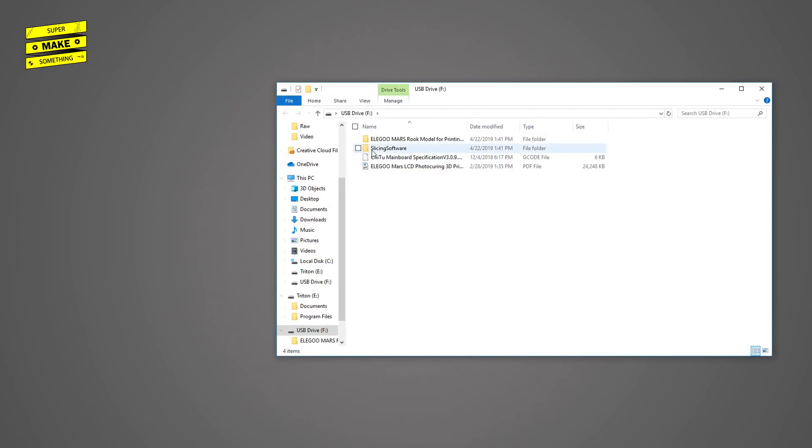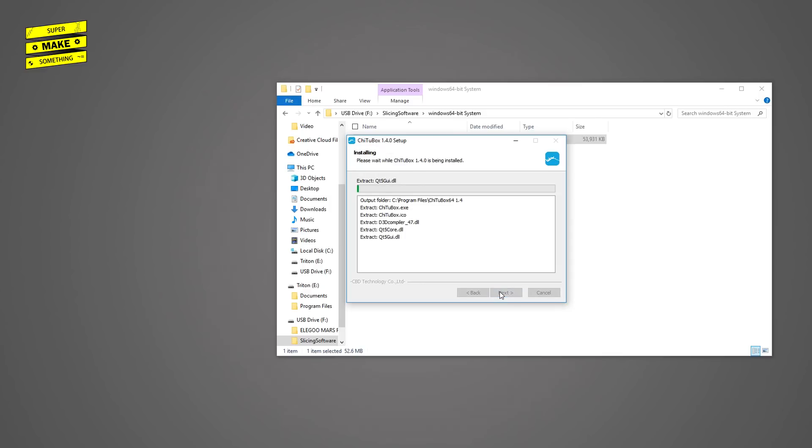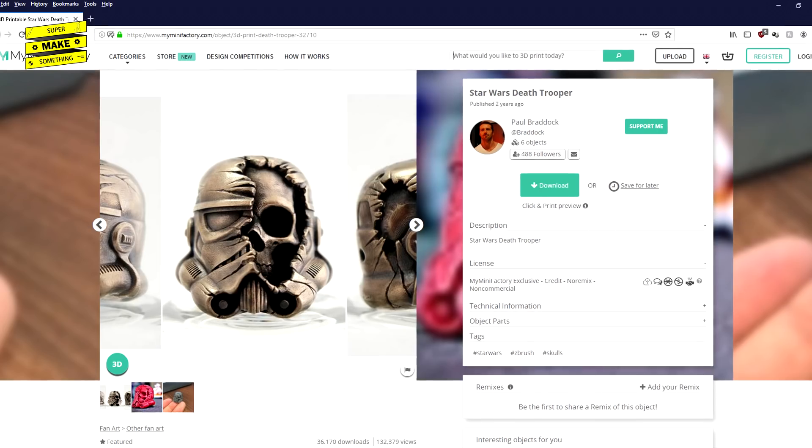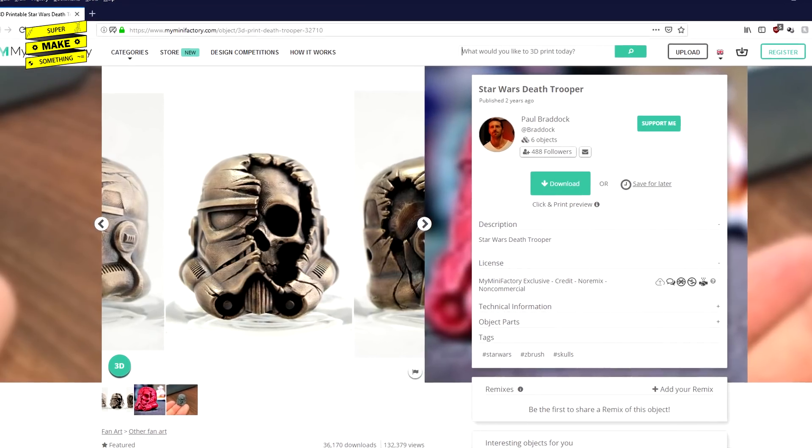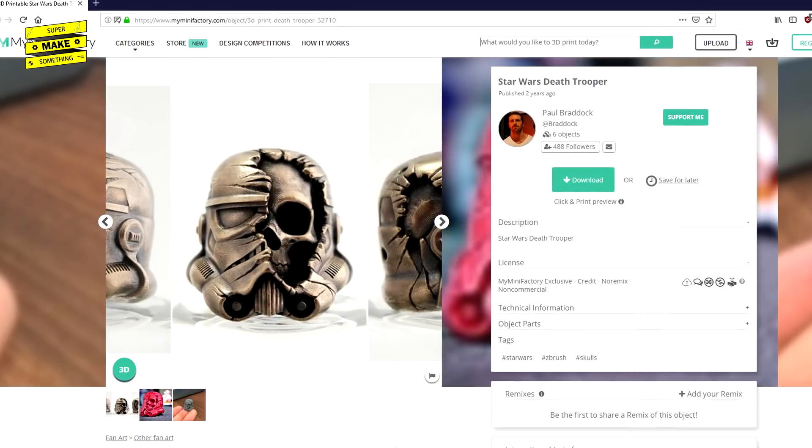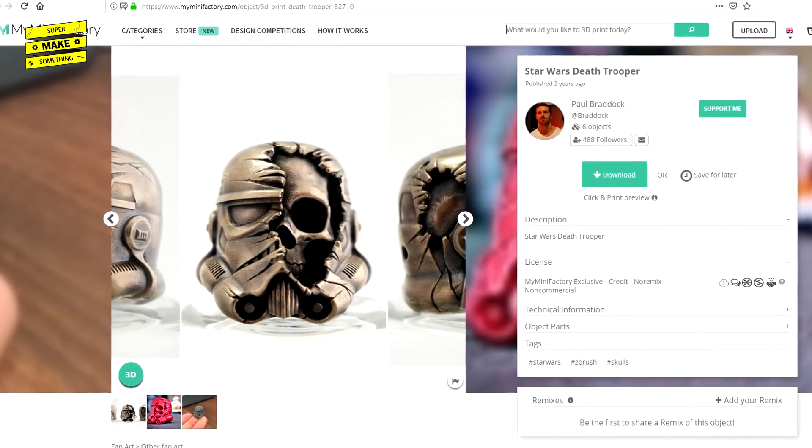To do this, I first installed the ChiTuBox slicing software used by the Elegoo Mars on my computer, which was located under the slicing software folder on the included USB drive. After the installation was complete, I launched the ChiTuBox program, and was presented with a user interface that would feel familiar to anyone who has used modern FDM slicing software packages like Cura. For the test print, I wanted a model with lots of fine detail, so I opted to print the My Mini Factory Star Wars Death Trooper model by Paul Braddock. A link to this STL file can be found in the video description below.